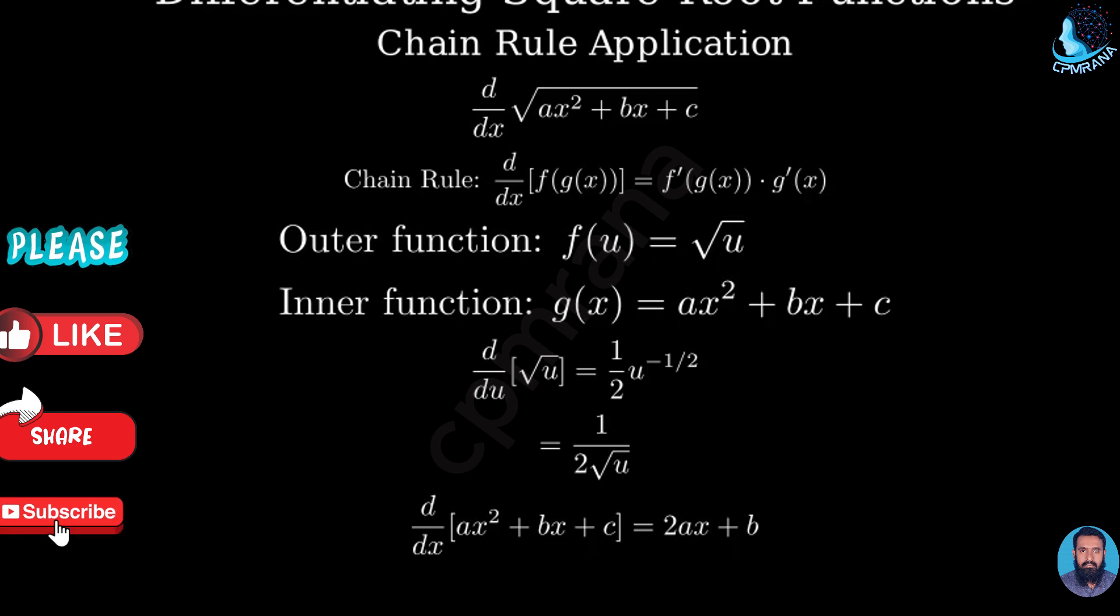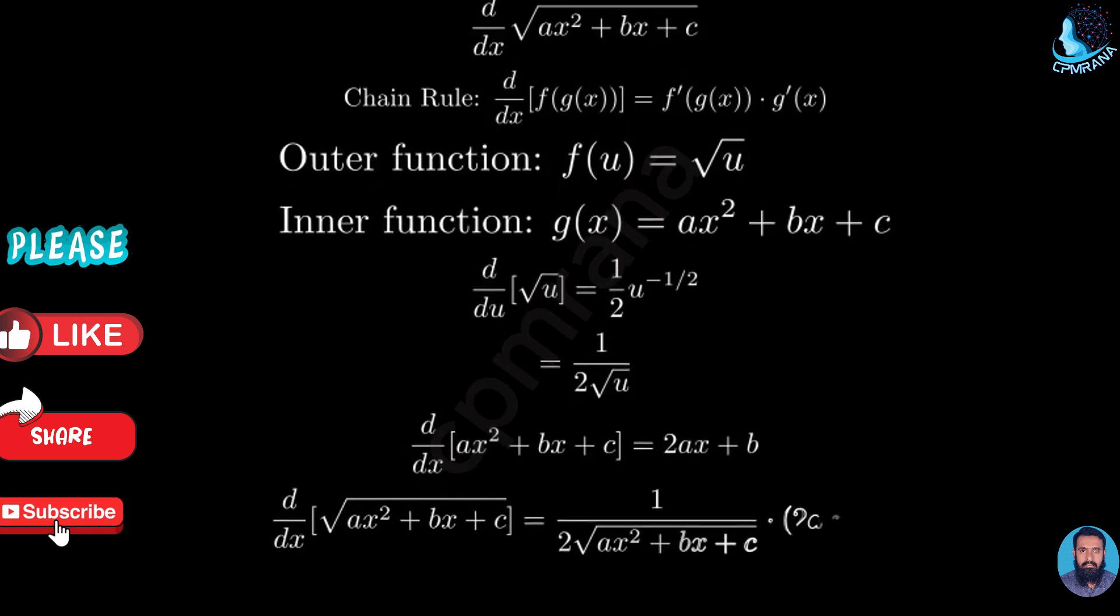Now, let's combine these parts using the chain rule. We take the derivative of the outer function, replacing u with our inner function, and multiply it by the derivative of the inner function.